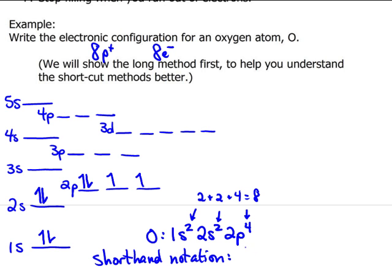One row up, the noble gas is helium. Helium has two electrons. So I take out the 1s², that's the core electrons, that leaves 2s² 2p⁴. And that's the electron configuration for oxygen in the longhand and the shorthand notation.